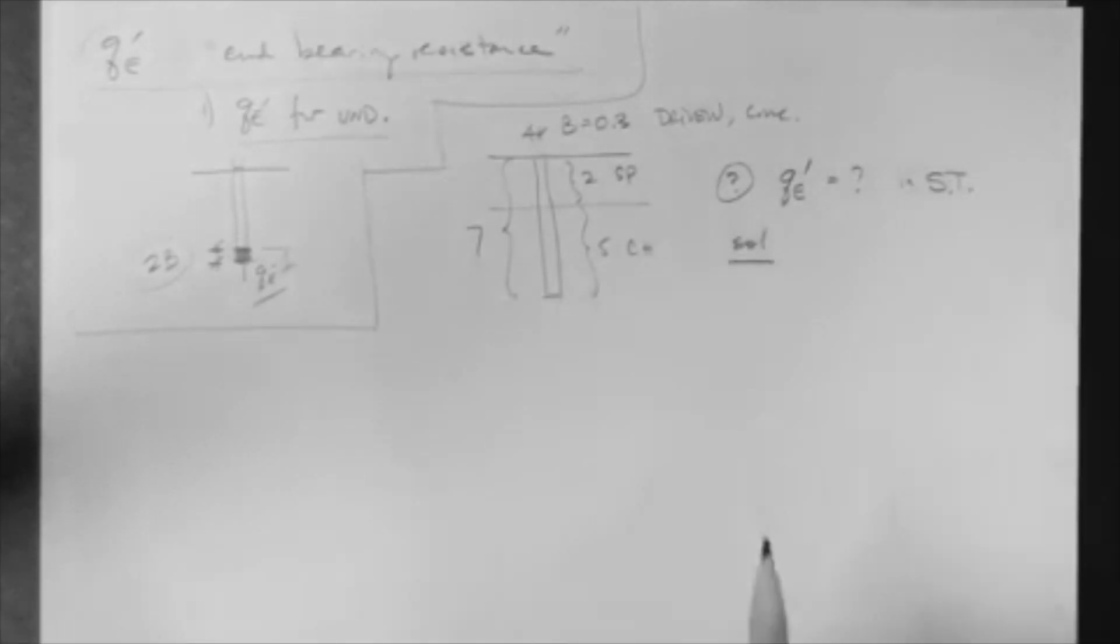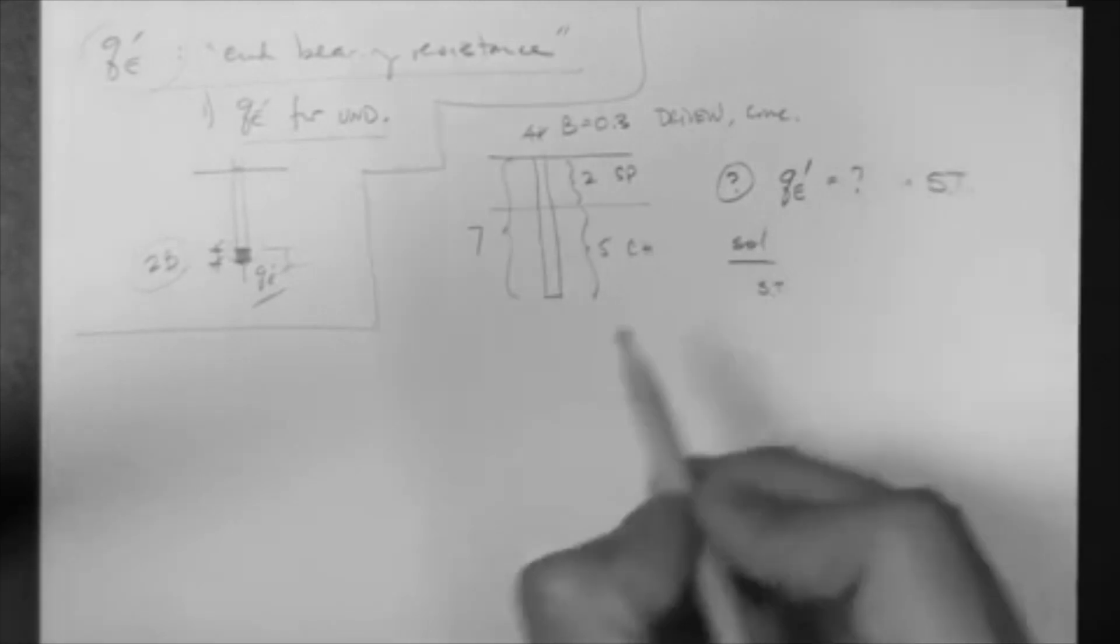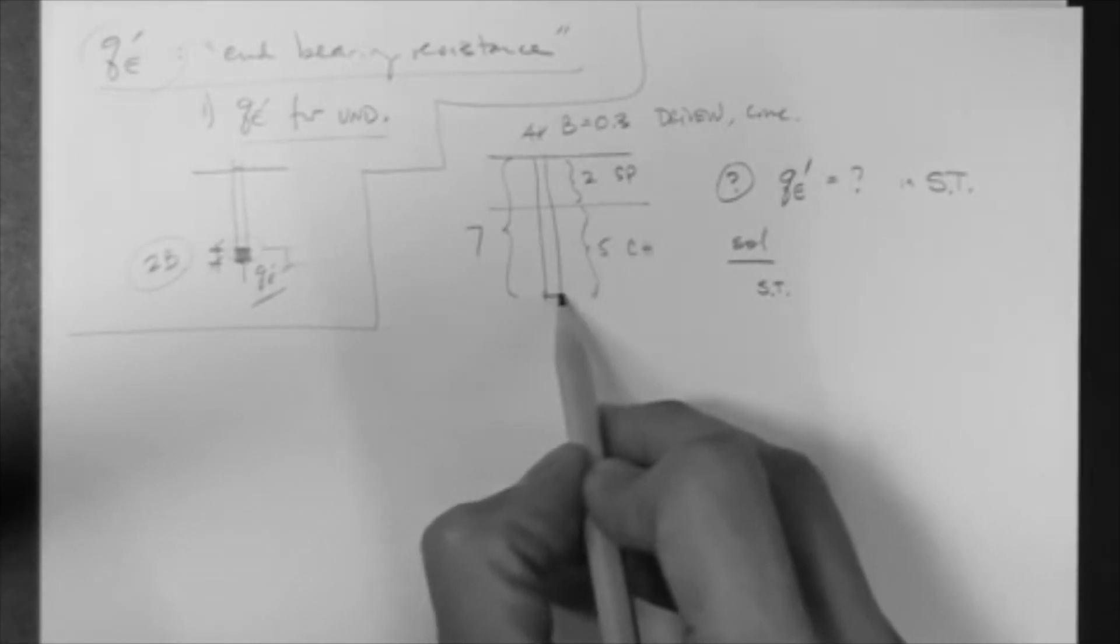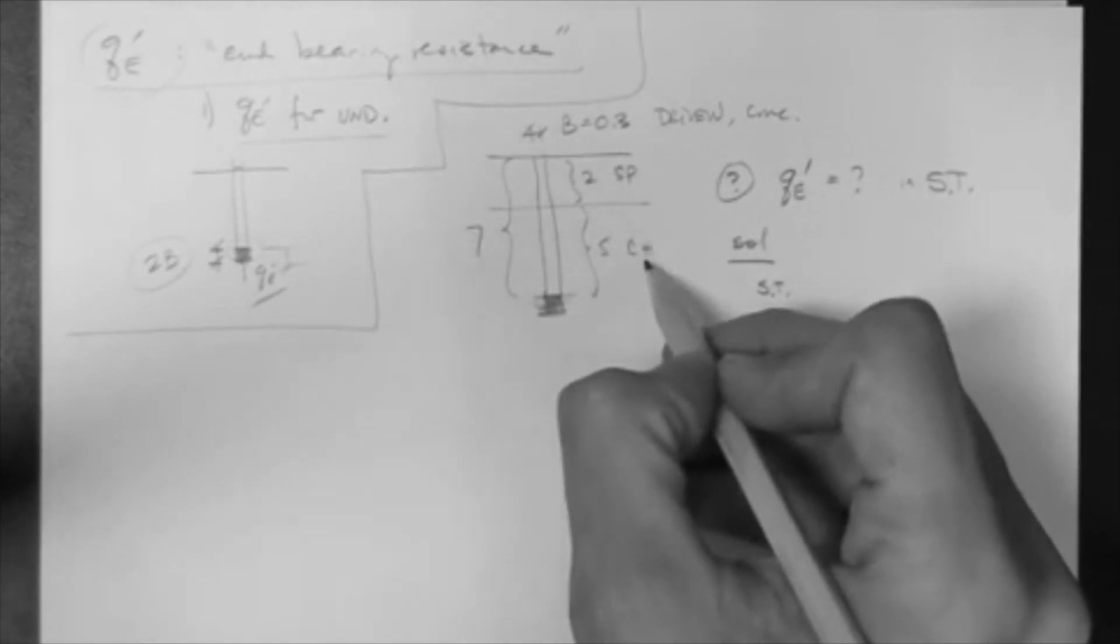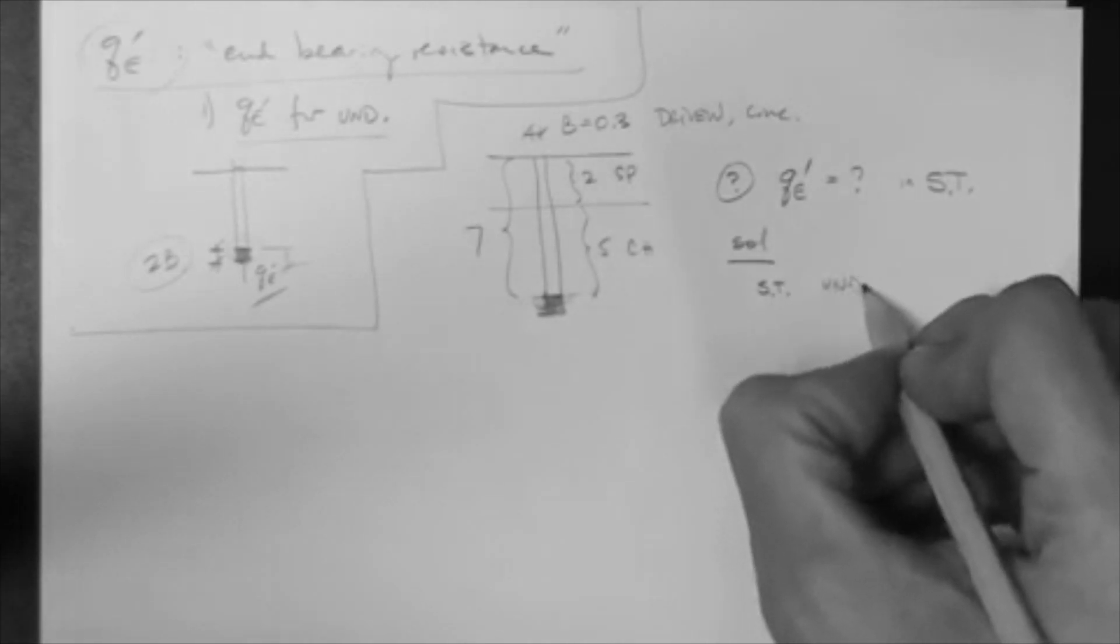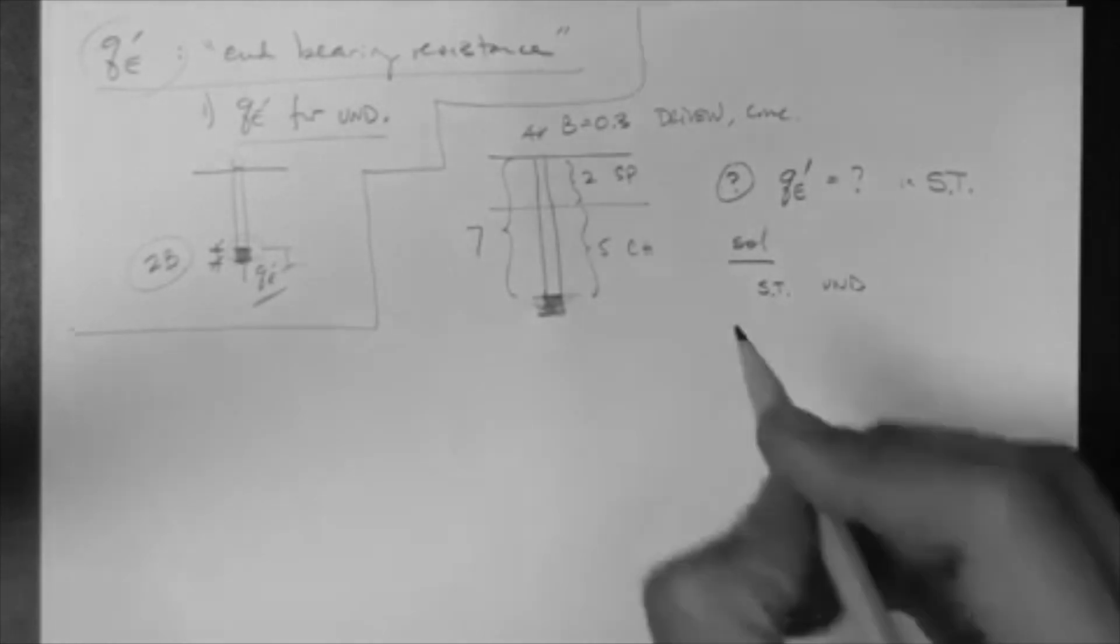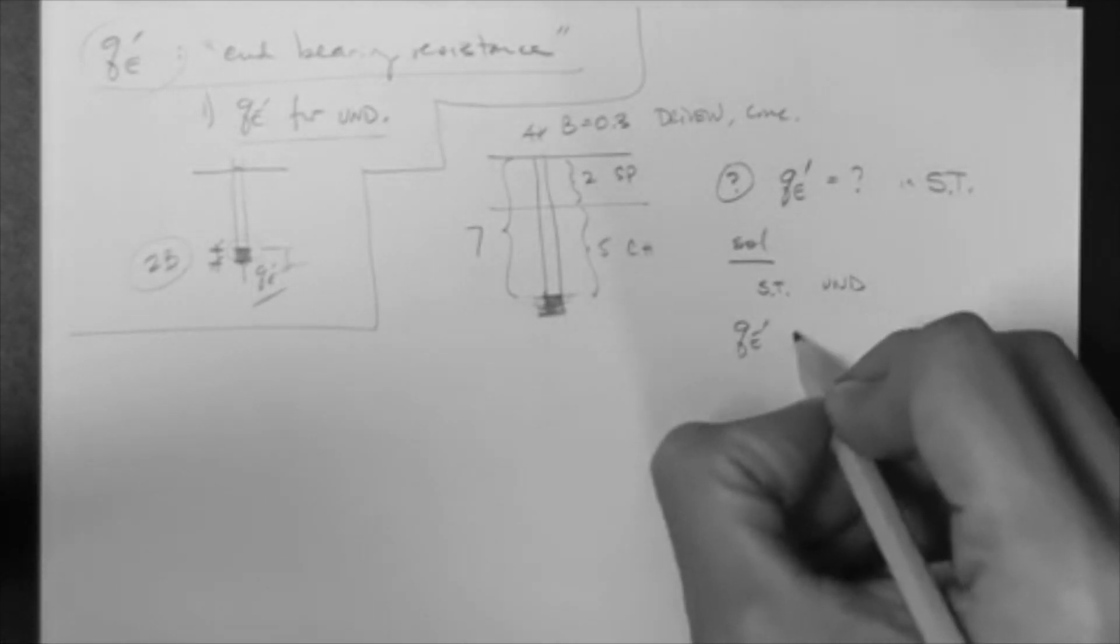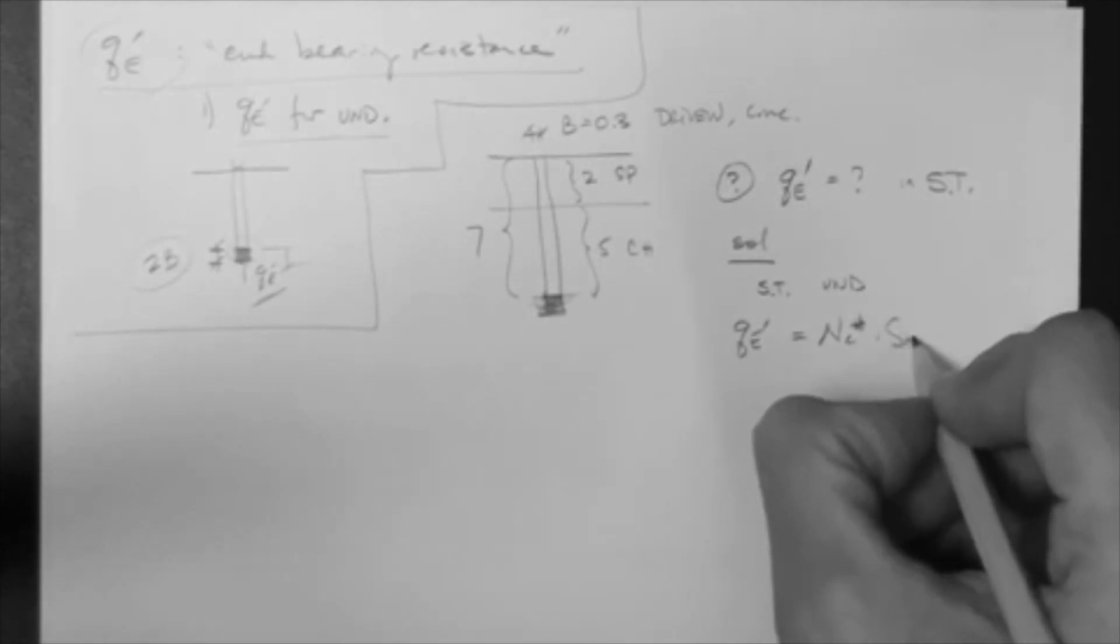Solution. All right, in the short term, the end-bearing, which is this portion here, this zone, is in the clay. Therefore, this zone is going to act undrained. So, we need to use the Nc* method. Qe' is equal to Nc* times Su.